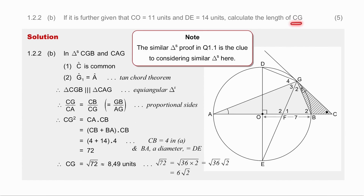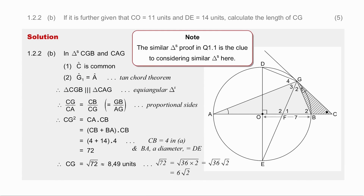In the next question, they ask you to find the length of CG — worth five marks, so we need to do a bit of work. The fact that they asked you similar triangles in question 1.1 is a clue that you need to use similarity. We are going to use triangle CGB and triangle CAG — those are the two triangles we'll prove similarity in. First, angle C is common. Second, angle G1 and angle A are equal because of the tan-chord theorem. With two angles equal, the triangles are similar by angle-angle-angle.